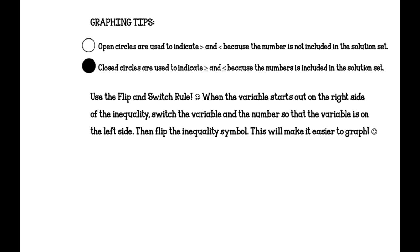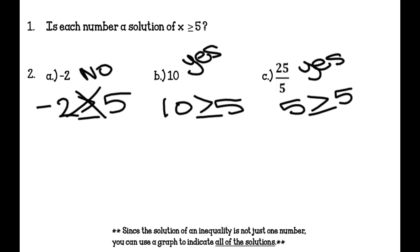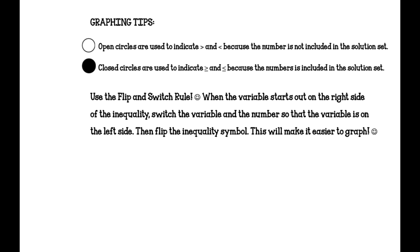Since the solution of an inequality is not just one number, you can use a graph to indicate all solutions. An open circle on a graph indicates greater than or less than, because the number is not included in the solution set. Closed circles indicate greater than or equal to or less than or equal to, because the number is included. We'll also use the flip and switch rule: when the variable starts on the right side, switch it to the left and flip the inequality symbol.